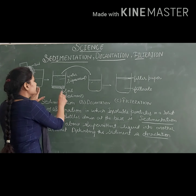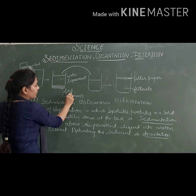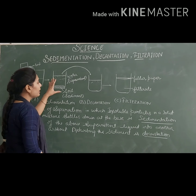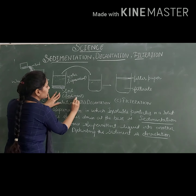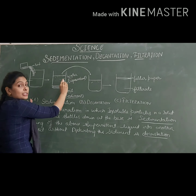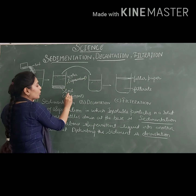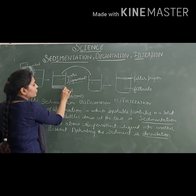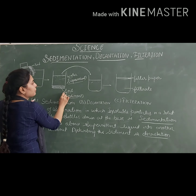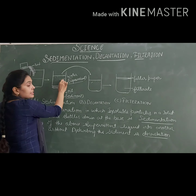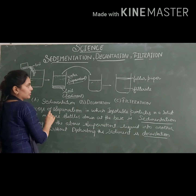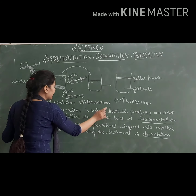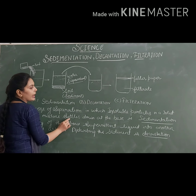You will notice that the soil you added has settled down, while the water is floating at the surface. So the soil that has settled down is termed as sediment, and the water floating at the surface above the soil is termed as supernatant liquid. This whole process of settling down of solid particles at the base and floating of liquid at the surface is termed as sedimentation. Sedimentation is the process of separation in which insoluble particles in a solid-liquid mixture settle down at the base.